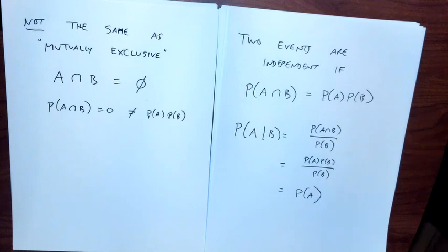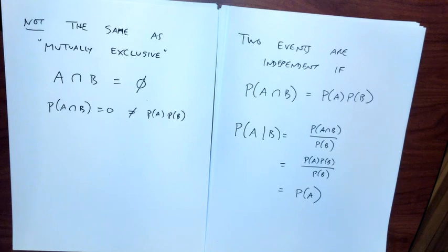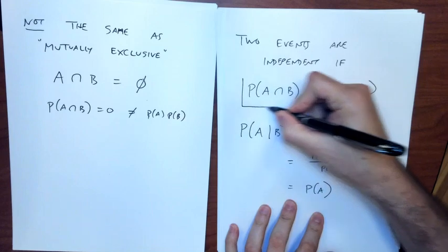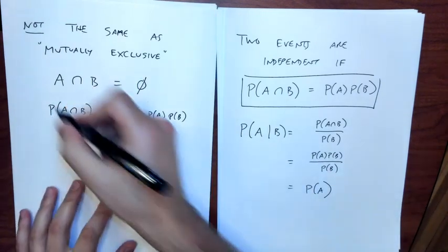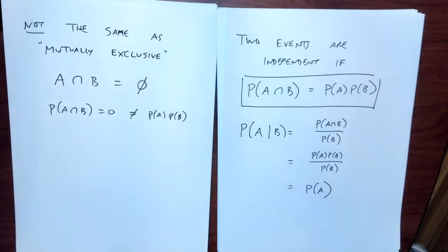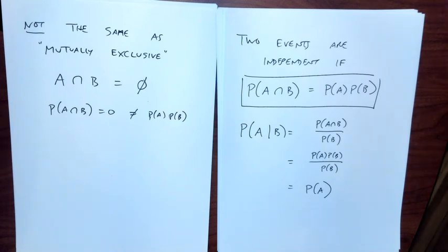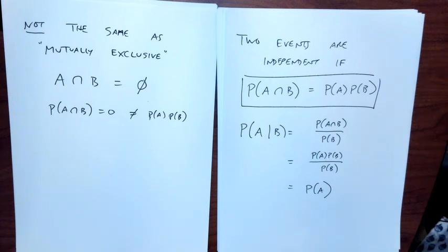To check whether two events are independent, you check whether probability of A intersect B equals probability of A times probability of B. Mutually exclusive events is a different concept — I'm only mentioning it because sometimes people confuse them. If events don't have an intersection and one event has a nonzero probability of happening, then you can't talk about independence.